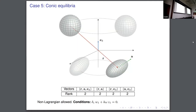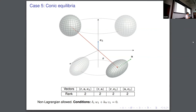The same happens for the case of the planar equilibria. We only have certain equilibria when we are in a Lagrangian-type configuration. So for the last two cases, we have restrictions on the possible configurations for a relative equilibrium. Now we arrive to the case of the non-Lagrangian equilibrium, because all the previous cases had all the points in the same plane. And here, we have that when the rank of the vectors is two — meaning none of them are all in the same line — we have the possibility of the non-Lagrangian equilibrium.